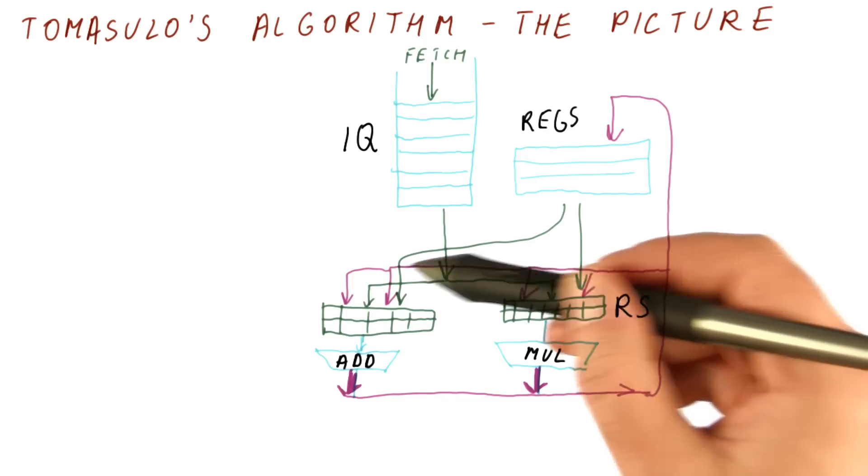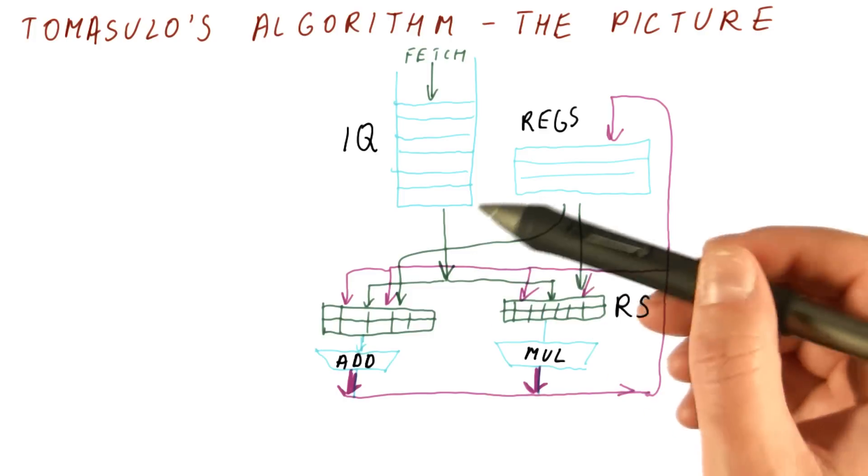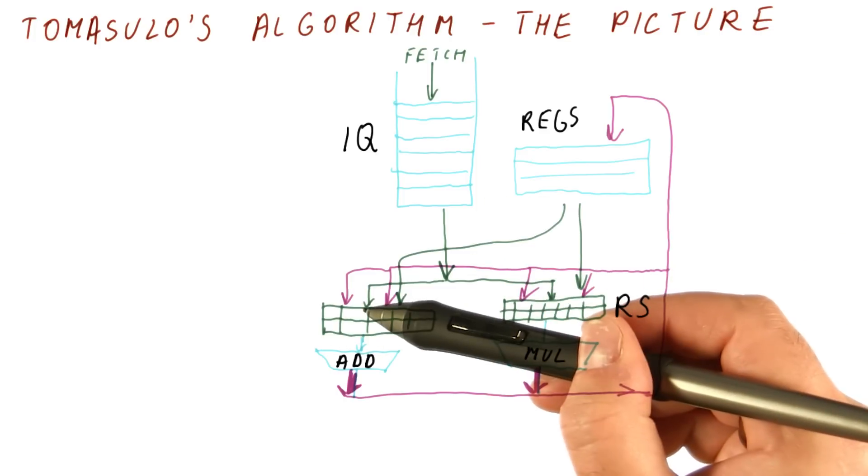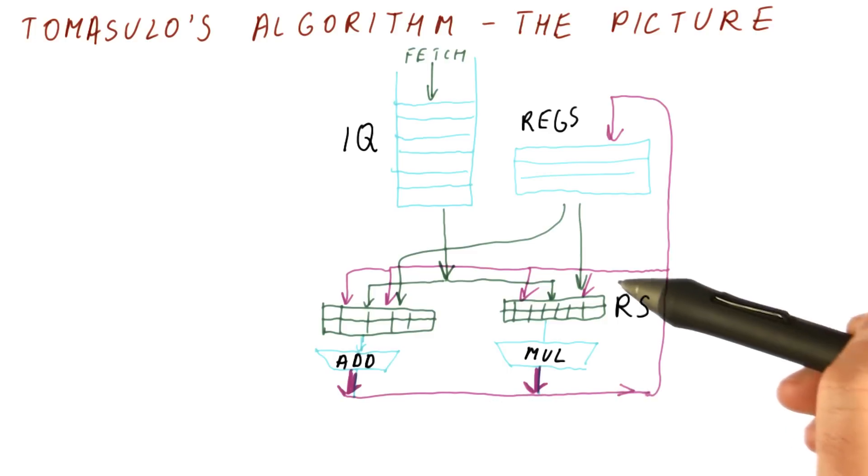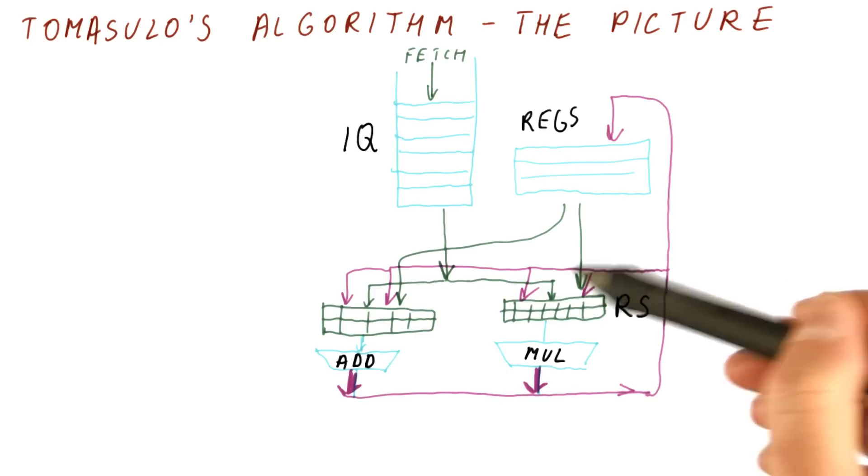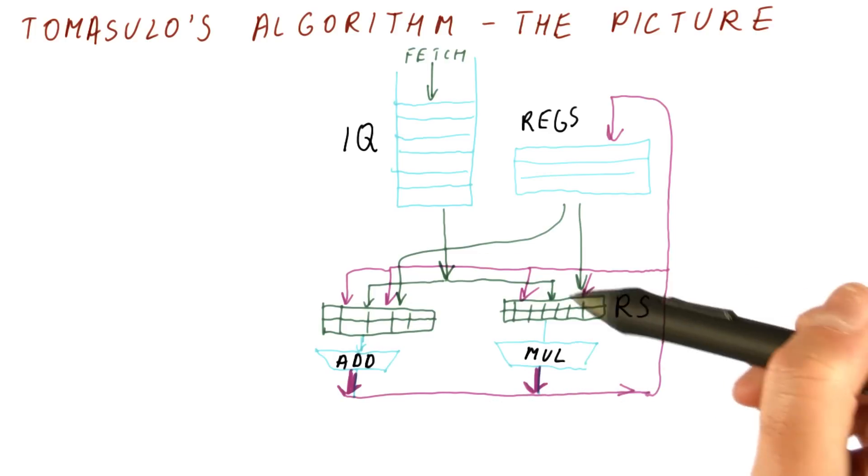But these results would also be broadcast to the reservation stations. Why? Because there are instructions here that are waiting for values that need to be produced. As values are produced, we need to tell these instructions that now your value has been produced, so they need to also go here.